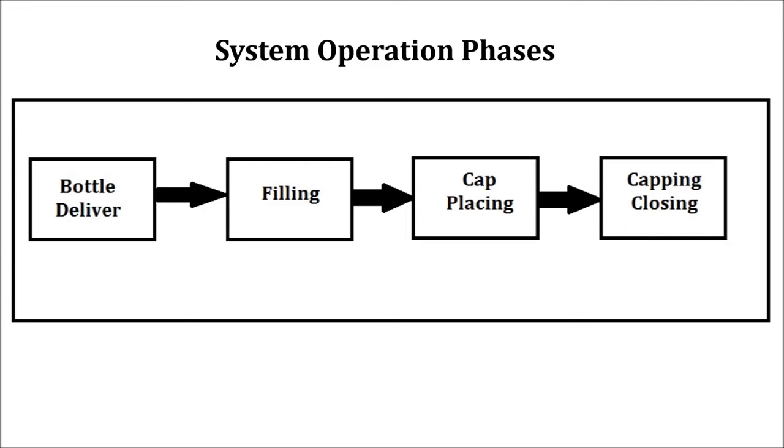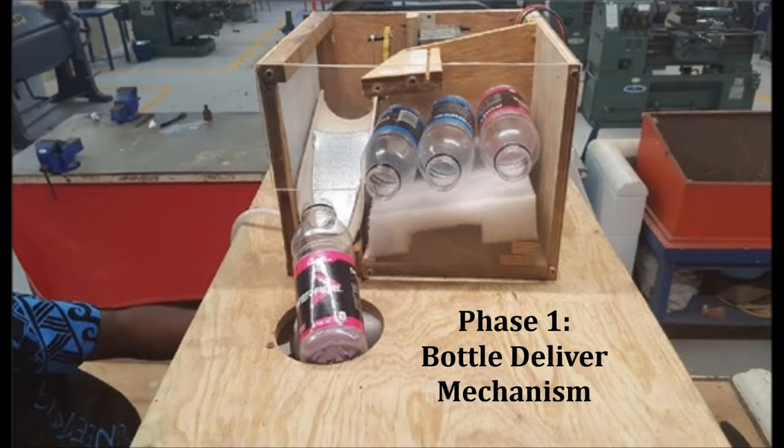The machine has four major phases: bottle delivery, bottle filling, cap placing, and cap closing.